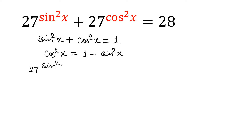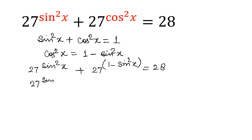The equation becomes 27^(sin²x) + 27^(1 − sin²x) = 28. Using the property of exponents, I can write 27^(1 − sin²x) as 27 over 27^(sin²x). So the equation is 27^(sin²x) + 27 / 27^(sin²x) = 28.